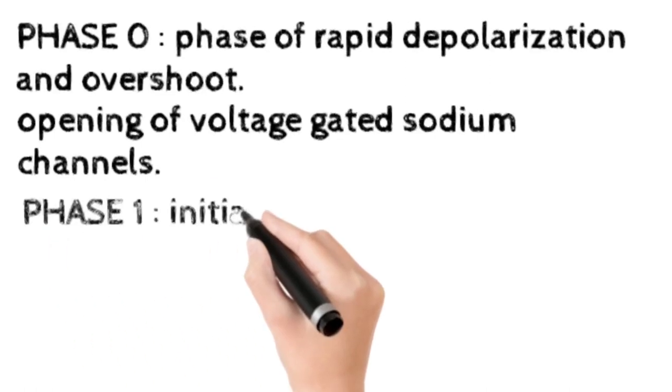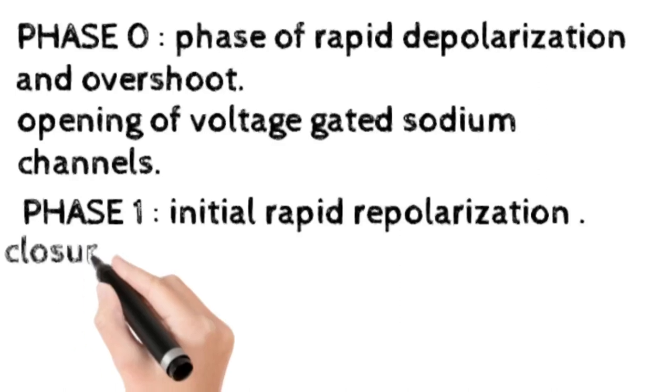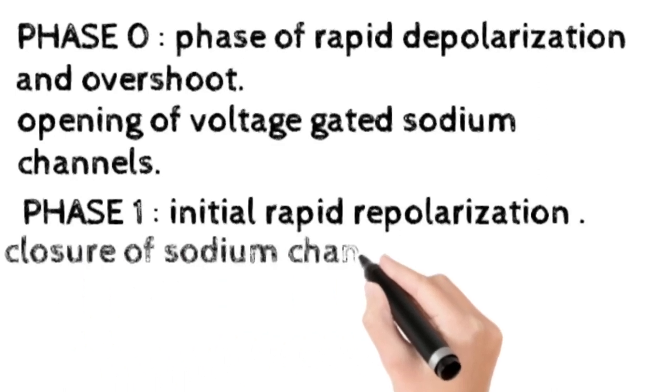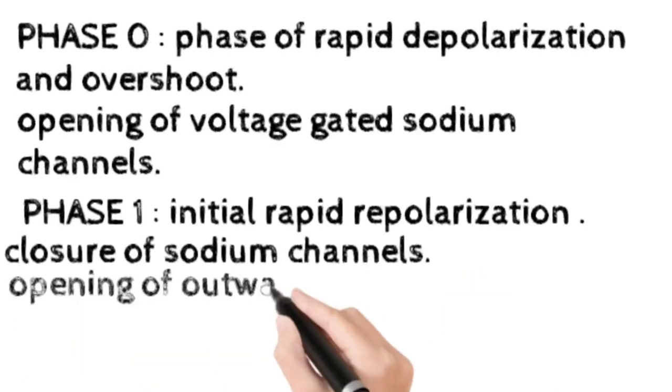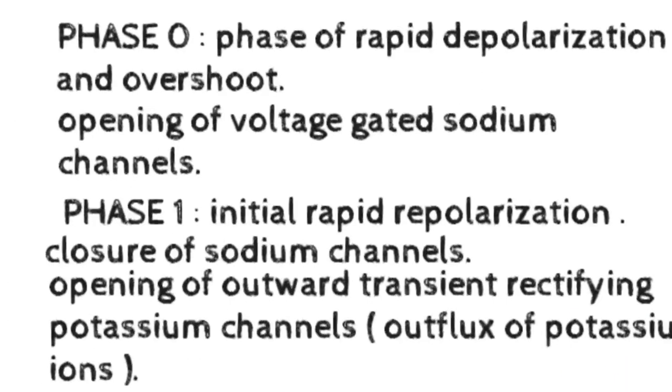Phase 1 is the phase of initial rapid repolarization, due to the closure of sodium channels and opening of outward transient rectifying potassium channels that causes the efflux of potassium ions.